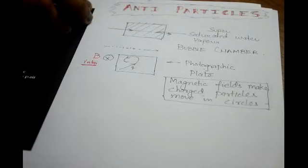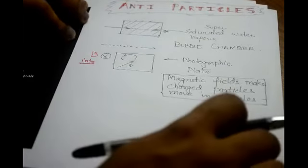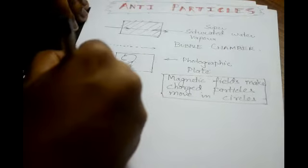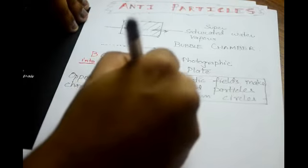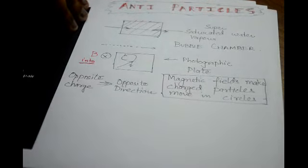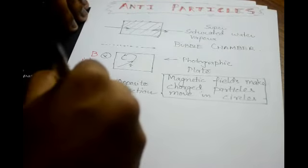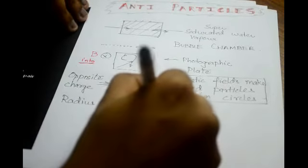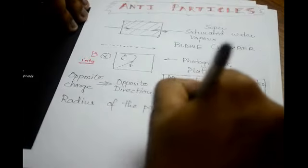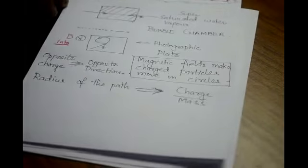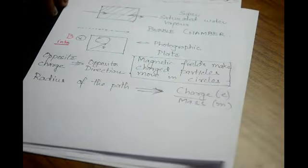Charged particles move around in circles when you have an applied magnetic field. If you have the opposite charge, it will move in the opposite direction — opposite charge means opposite direction. The charged particle has a particular charge and a particular mass, and the radius of the path is dependent on the charge-to-mass ratio. We call this the E-by-M ratio, where E is for the charge and M is for the mass.